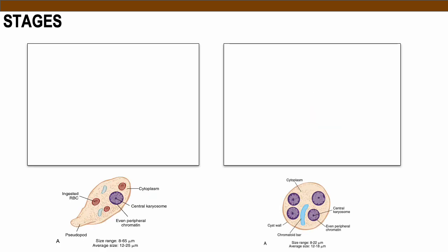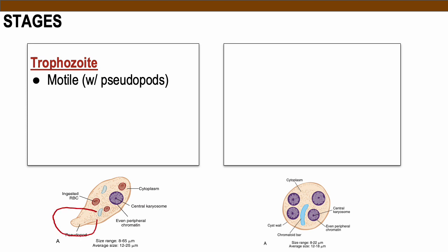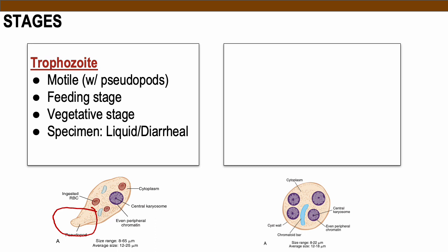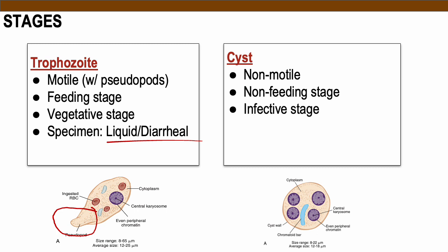Amoebas have two morphological stages. The trophozoite is motile with pseudopods — it is the feeding and vegetative stage of the parasite. Stool specimens that are liquid and diarrheal are the best specimen for recovery of trophozoites, but trophozoites are very delicate. The longer the stool stands at room temperature, the lower the chance of recovery; they typically disintegrate after about 2 hours. The cyst is the non-motile, non-feeding, but infective stage of the parasite. Well-formed stool more commonly harbors the cyst stage.